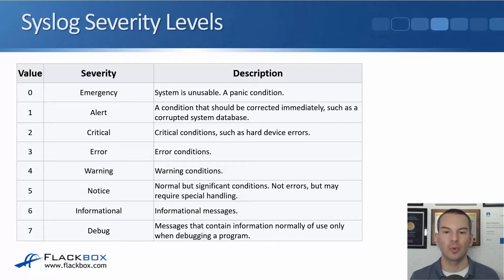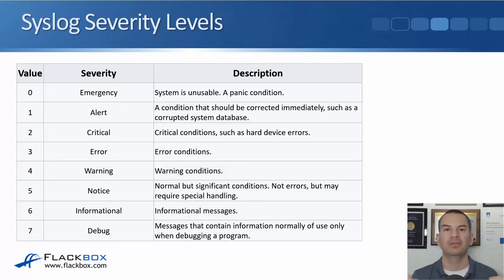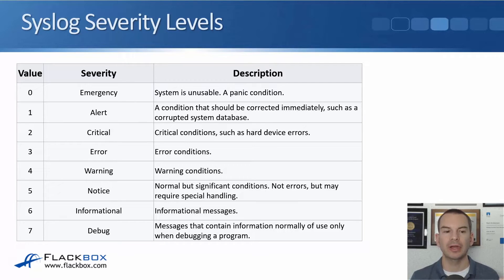The next severity level is alert, which is level one — a condition that should be corrected immediately, such as a corrupted system database; it's still really bad. Critical is level two, such as hard device errors. Level three is an error. So really levels three and above up to zero are bad things, bad errors happening on your device.